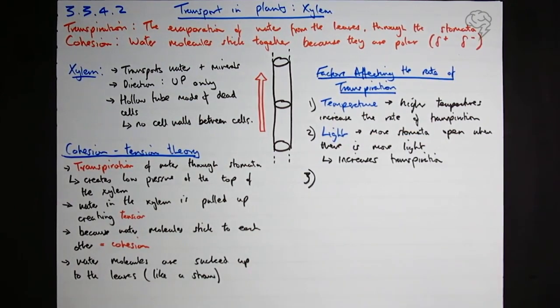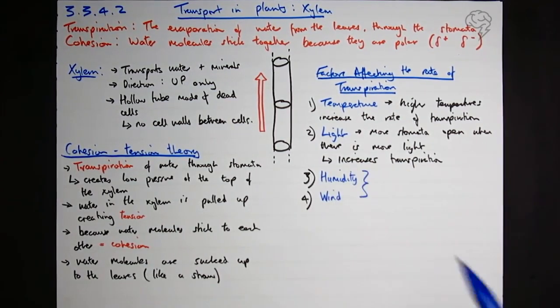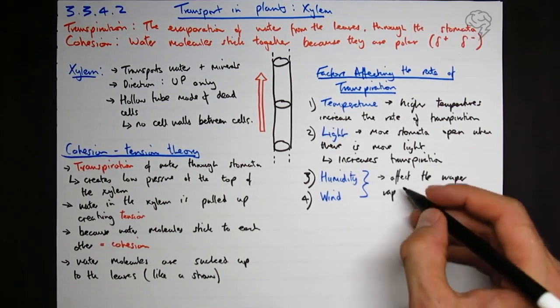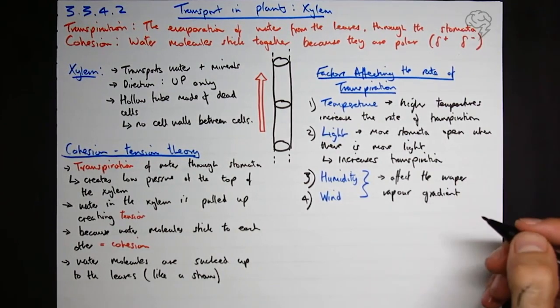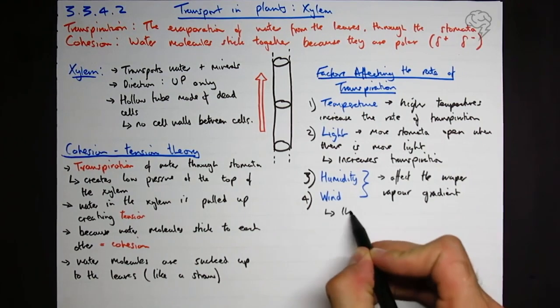Number three, these two, three and four basically are going to go together. And the reason why they affect the rate of transpiration is the same. So I'm going to group them together. So we've got humidity, and we've got wind or air movement. So both of these affect the water vapor gradient. So if it's really dry outside, then the moistness of the leaf is going to have a steep vapor gradient, and so more water will diffuse out by transpiration. If it's very humid outside, it's very wet outside, or there's not very much wind, then there won't be a huge vapor gradient, and so there won't be so much transpiration.